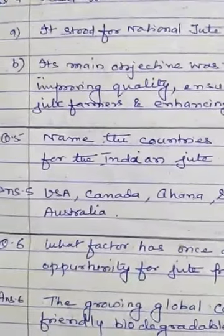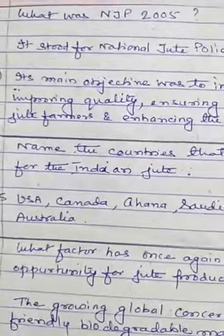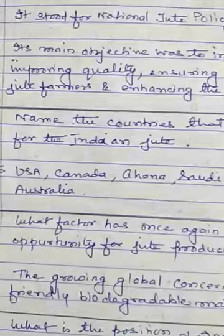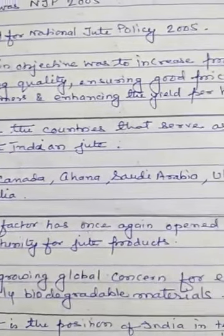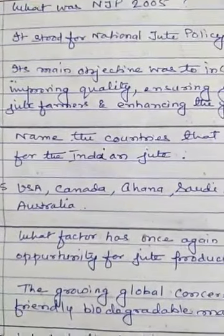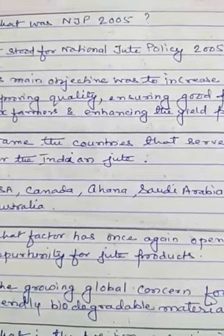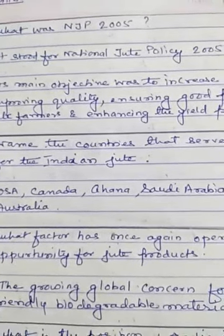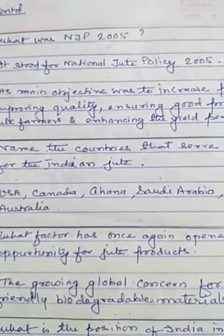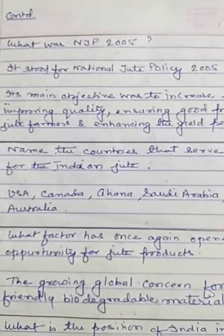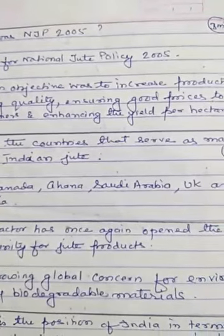Question six: what factor has once again opened the opportunity for the jute industry? This is a one mark, skill-based, application-based question. The answer is: the growing global concern for environment-friendly biodegradable materials. The whole world is realizing that use of synthetic fibers is creating environmental problems because all synthetic materials are non-biodegradable. At the international level, pressure is being given to all countries to use biodegradable substances for packaging, and jute is the best biodegradable, environment-friendly substance — that's why it has once again created an opportunity for the jute industry.